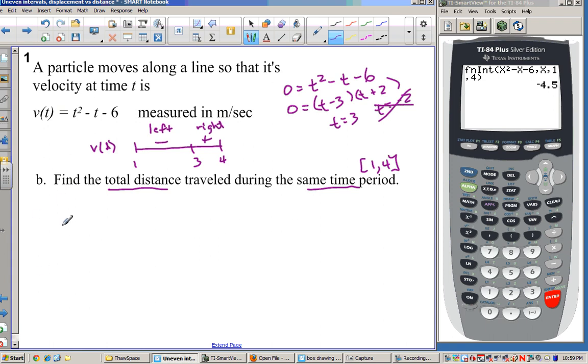So one way we could deal with this is we could say, well, we've got to take the integral from 1 to 3 of my velocity, and I'm going to want to change the sign on that, or just take the absolute value. So it becomes positive. And to that, I can add the integral from 3 to 4 of v(t) dt. And that will get us the correct answer.